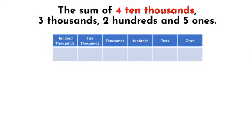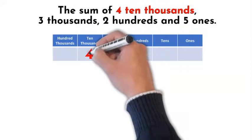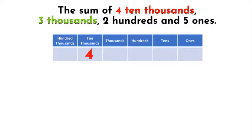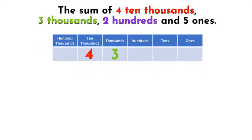We can see that there are 4 ten thousands. Let's place the 4 in our ten thousands place. Where should we place the 3? Correct, we will place this in our thousands place. Now, the 2 goes into the hundreds place.